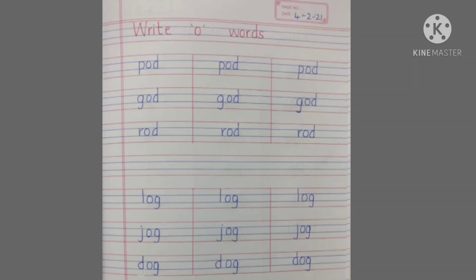Today you will be writing O letter words, or O sound words. A small note to the parents: write the heading in the first line of the notebook with a reading pen. Children will write the date and start writing the following words from the second line: POD, GOD, ROD, LOG, JOG, DOG. Each word you have to write three times as shown in the picture.